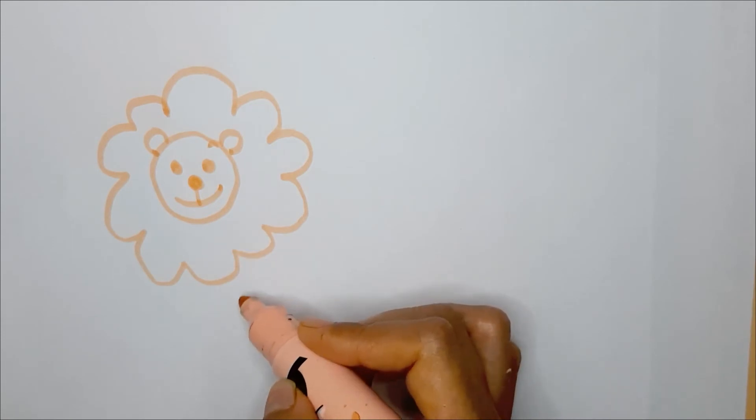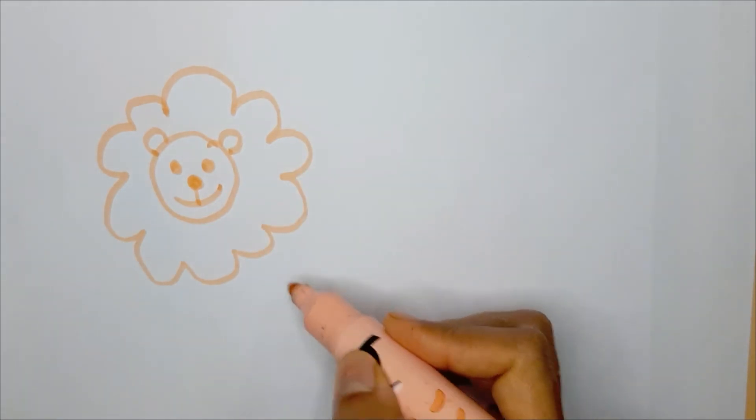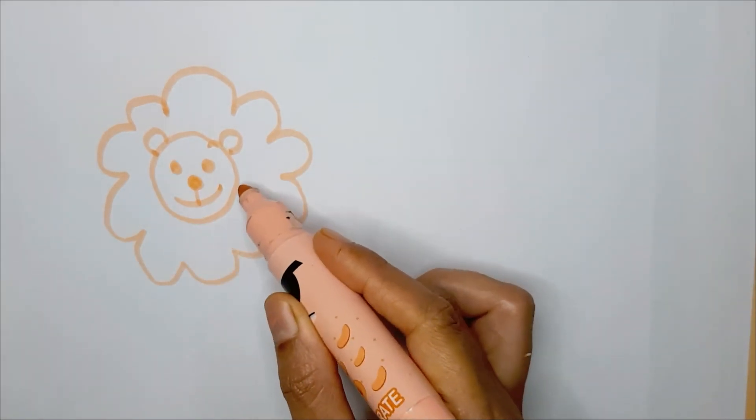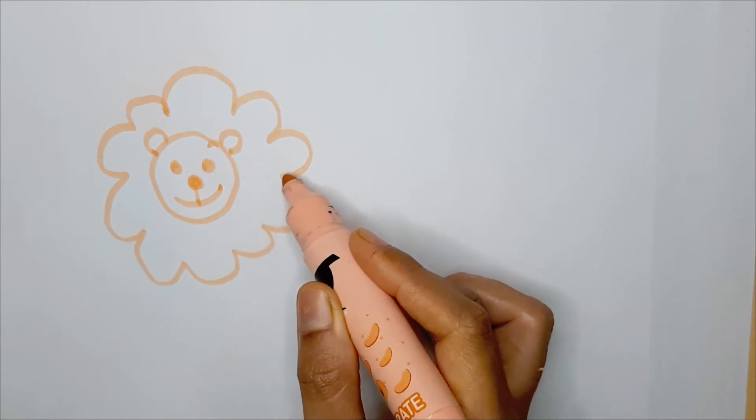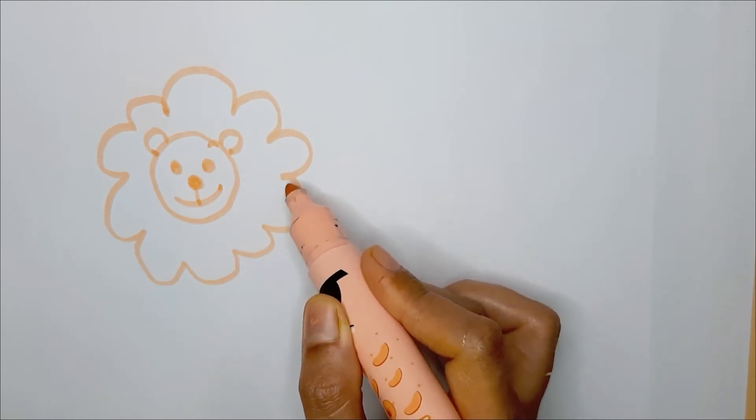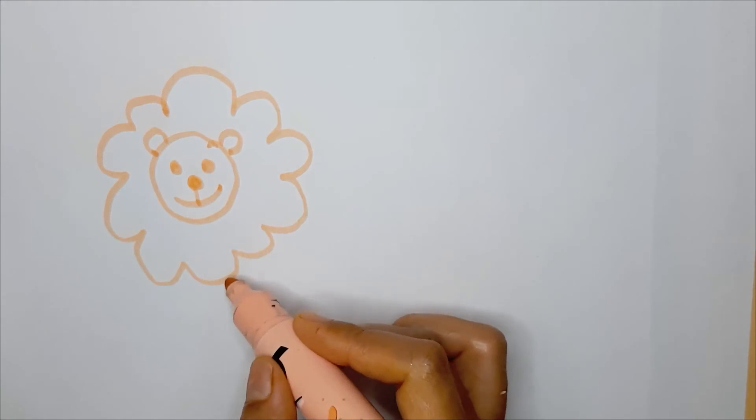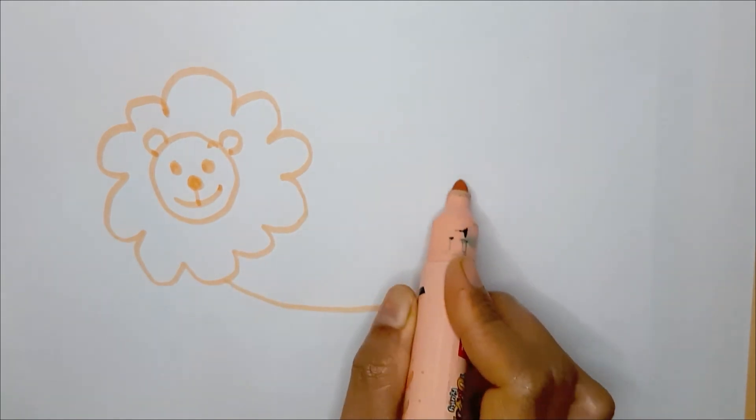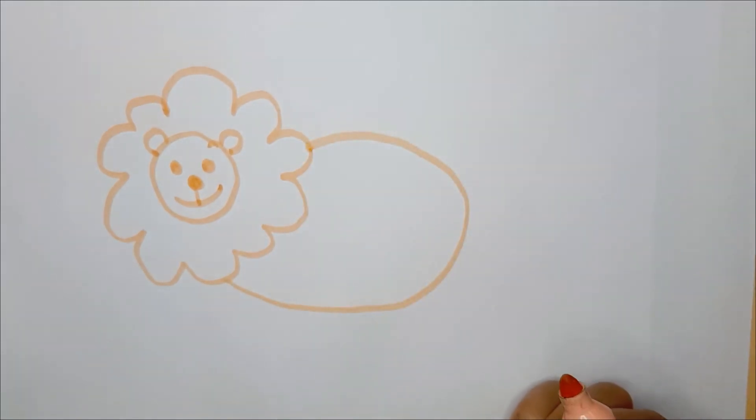So you have to make one more circle. Now we can't go over his mane because his body is behind it, so you need another circle. Okay, are you done? Now we make his legs.